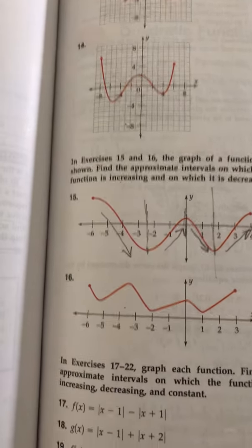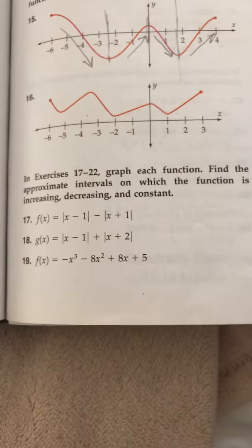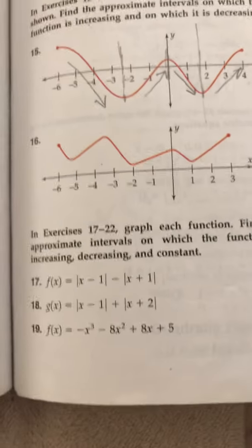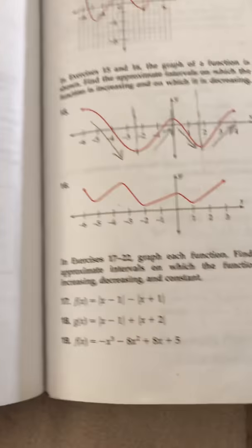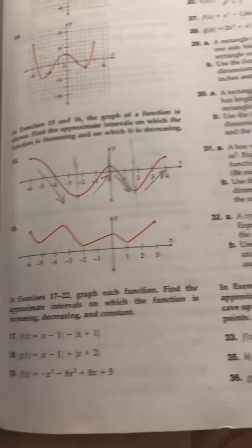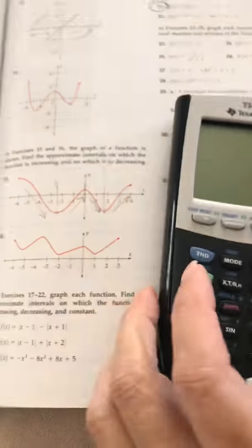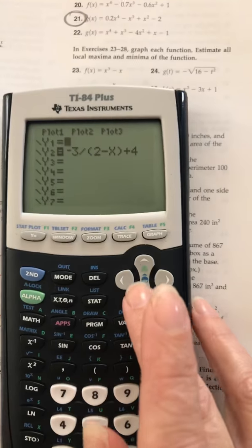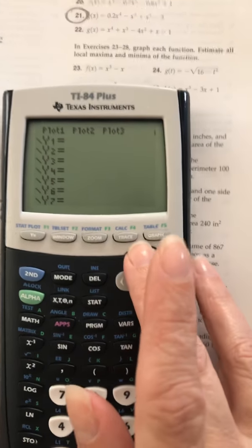Number 17 asks the question graph each function and find the approximate intervals on which it is increasing, decreasing and constant. So I'm actually gonna go to my calculator. I'm adding my calculator here. Alright so I'm gonna turn it on. I'll go to my calculator. I'm gonna go to y equals clear out what I have and I'm going to graph the function.